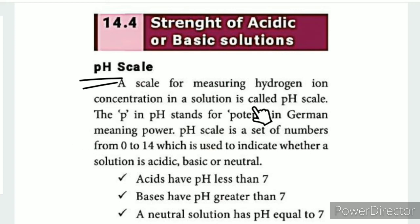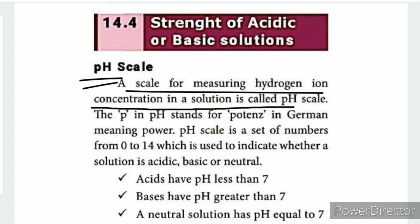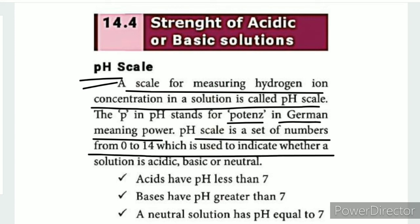A solution's hydrogen ion concentration is measured using the pH scale. The pH scale — in German, 'p' means potential, meaning power of hydrogen. The pH scale is a set of numbers from 0 to 14, used to indicate whether a solution is acidic, basic or neutral.